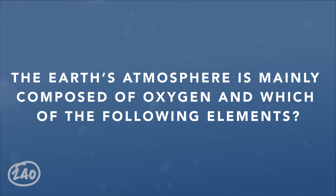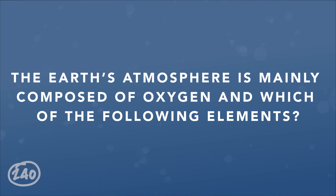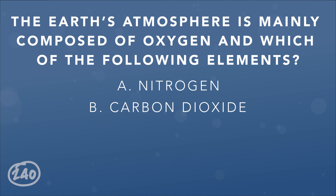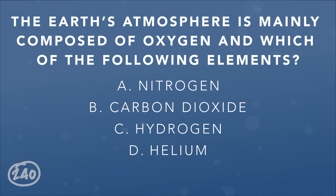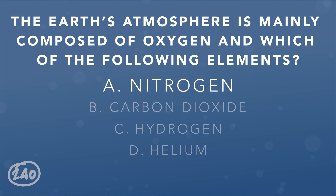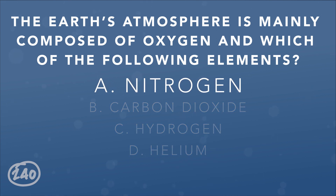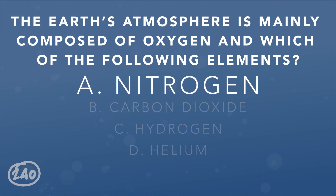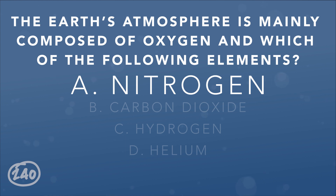Question 2: Earth's atmosphere is mainly composed of oxygen and which of the following elements? A. Nitrogen, B. Carbon dioxide, C. Hydrogen, D. Helium. The correct answer is A. The main components of Earth's atmosphere are oxygen and nitrogen. It's also composed of small amounts of carbon dioxide, argon, and very small amounts of other gases.